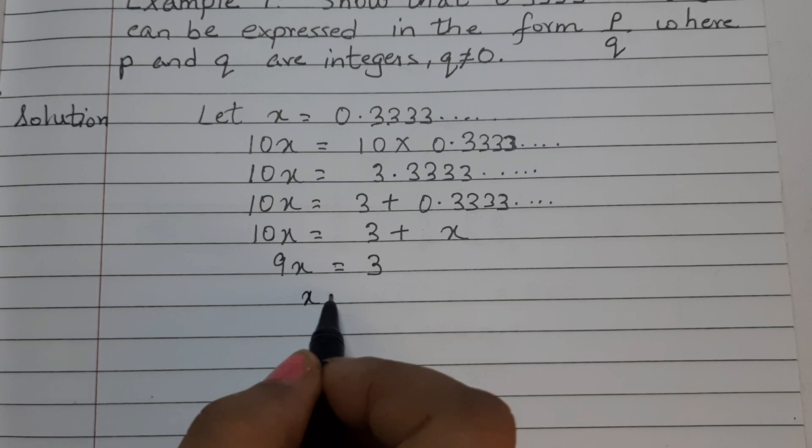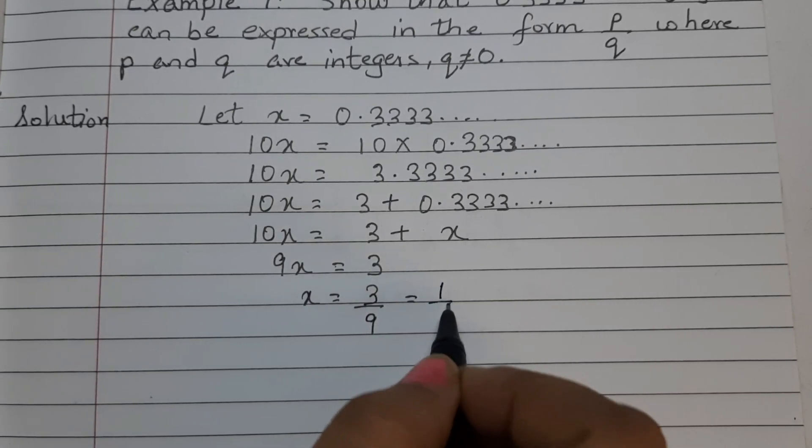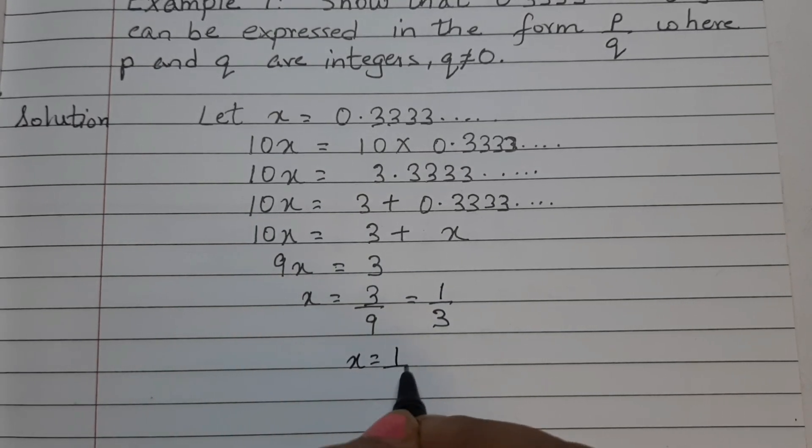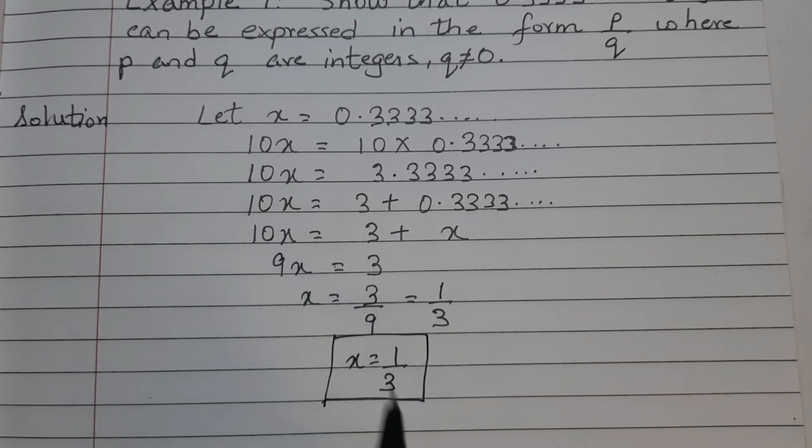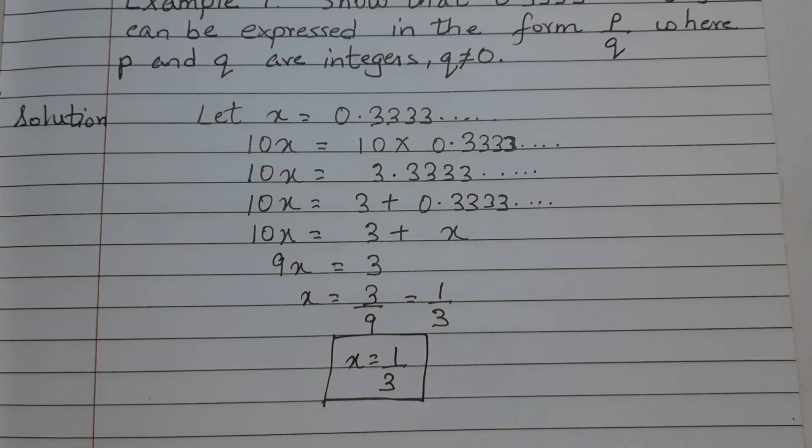x is equal to 3 by 9, or we can say in simplest form, 1 by 3. So x is equal to 1 by 3. So this is the answer. I hope this is clear to all. Thank you.